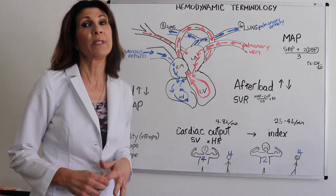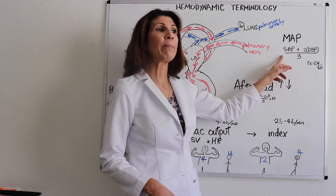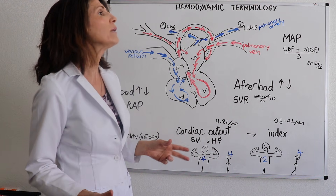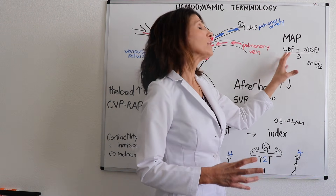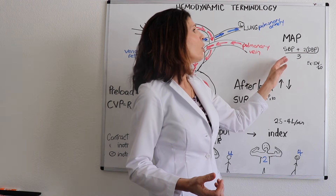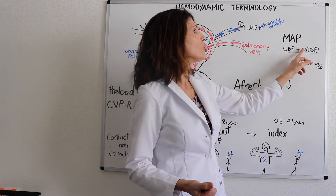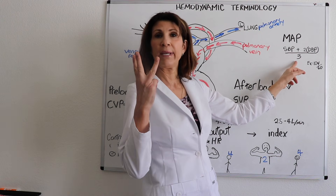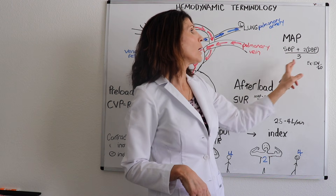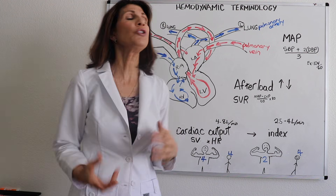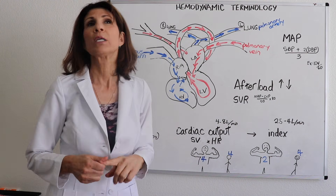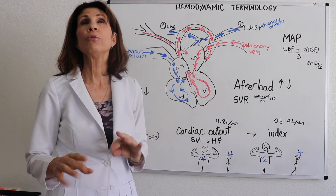Any index you get is going to factor in body surface area. Now let's talk about the MAP — mean arterial pressure — a quick and dirty blood pressure that takes two components, systolic and diastolic, and gives you one number. The formula is: systolic blood pressure plus two times the diastolic blood pressure, divided by three. For example, a blood pressure of 104 over 60 yields a MAP of 74.